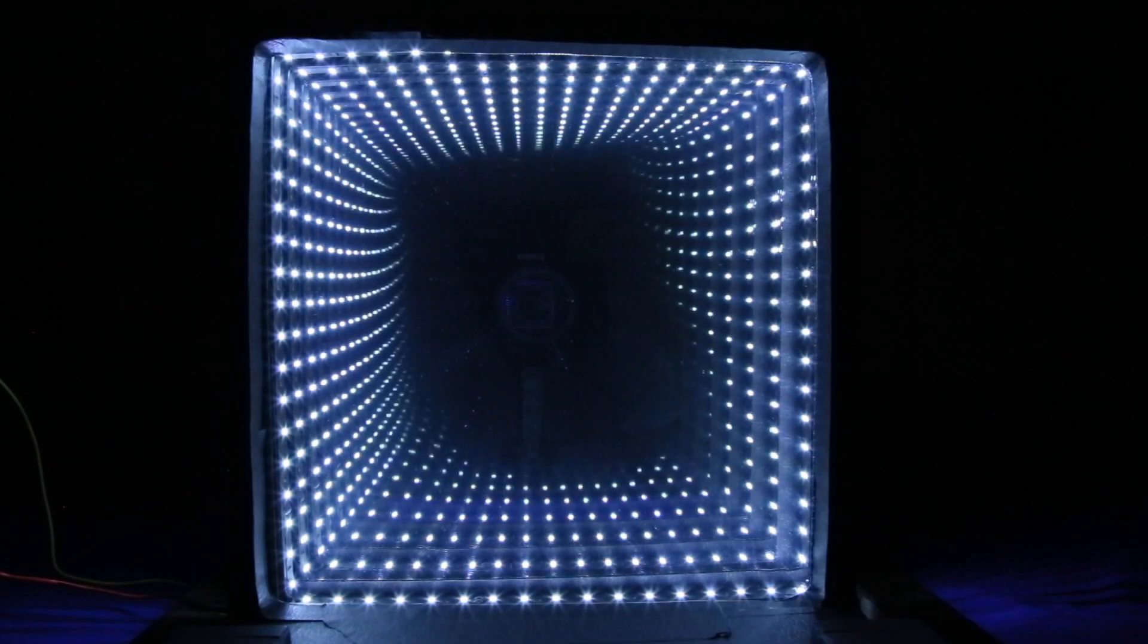This creates the illusion that the images retreat towards infinity, hence the name. The front mirror is only partially reflective, allowing some of the light from the reflections to pass through so they can be seen. The distortions seen here are from the plastic mirrors not being perfectly flat and the holding frames not being true squares.